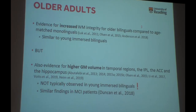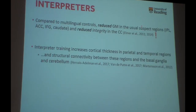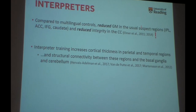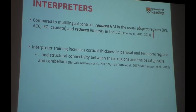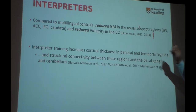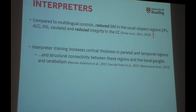Similar findings were presented in patients with mild cognitive impairment very recently. And then I come to my favorite group — I have a love-hate relationship with this group, because nothing makes sense when you look at the brains. Or does it? Compared to multilingual controls — people that speak the same number of languages as our interpreters — the interpreters show reduced gray matter volume in the frontal and cingulate regions, and also reduced integrity in the corpus callosum, a major white matter tract.